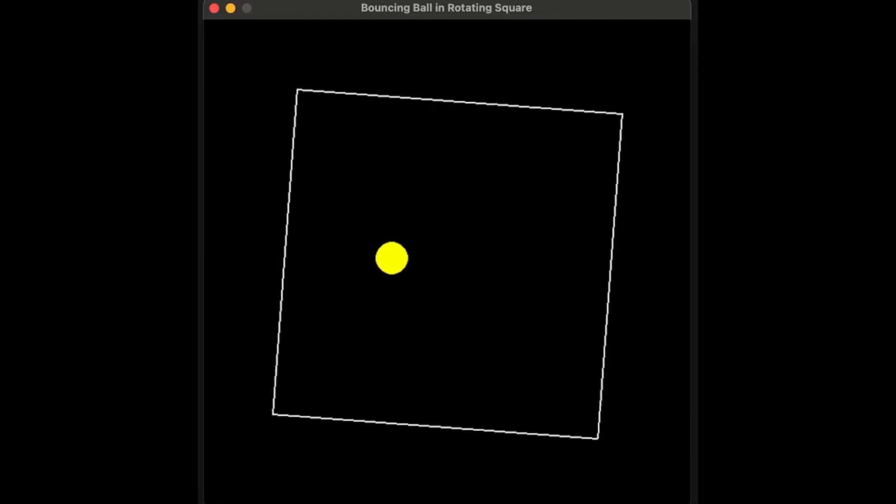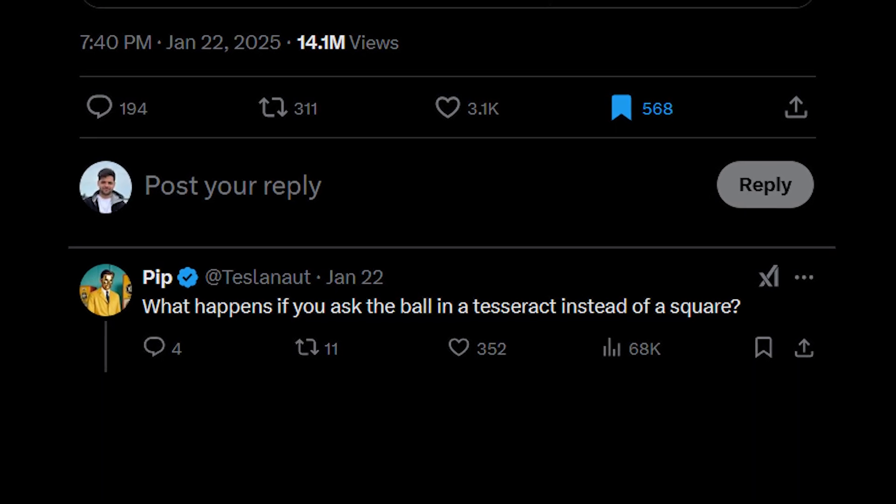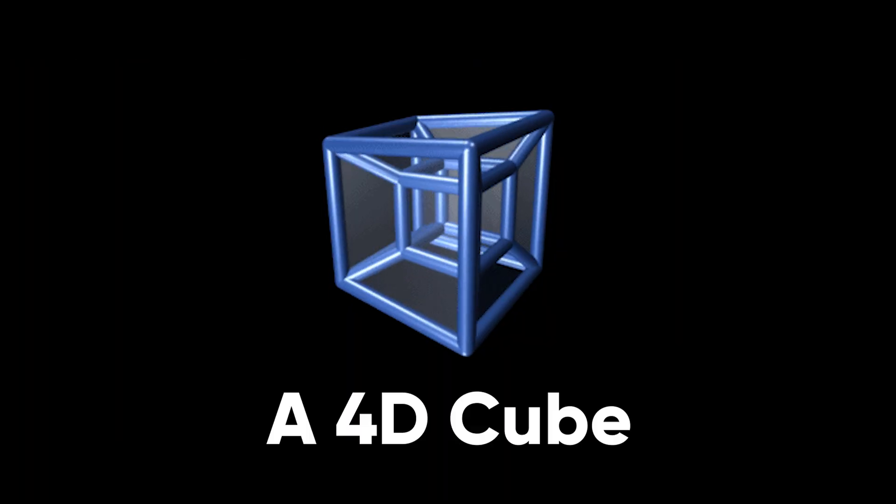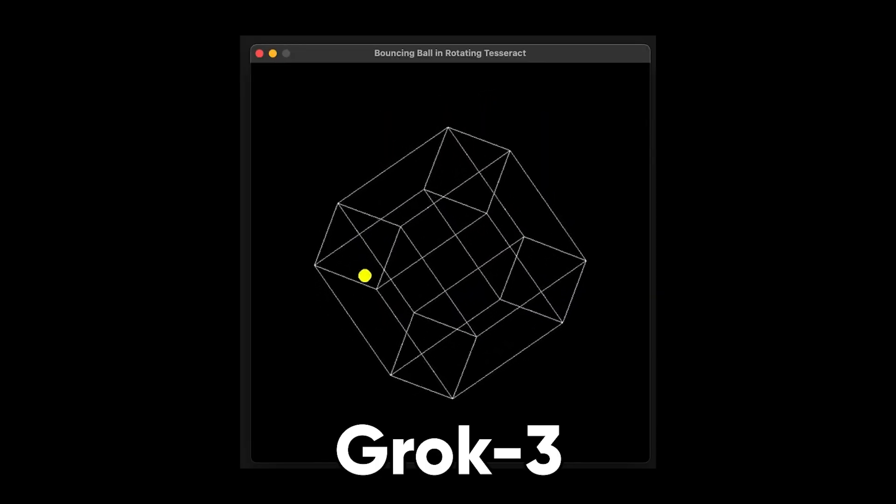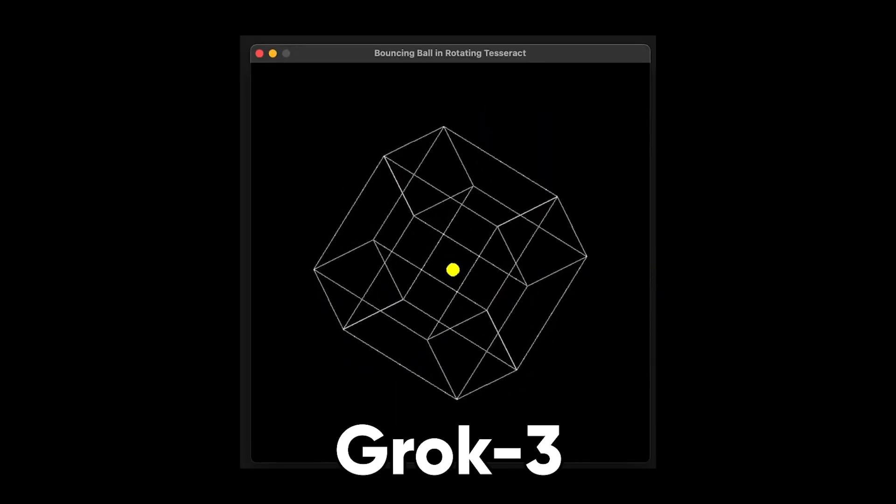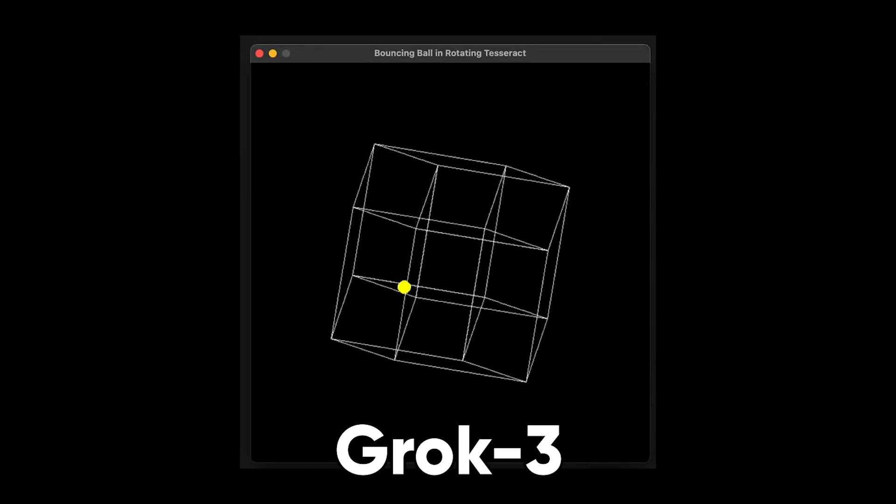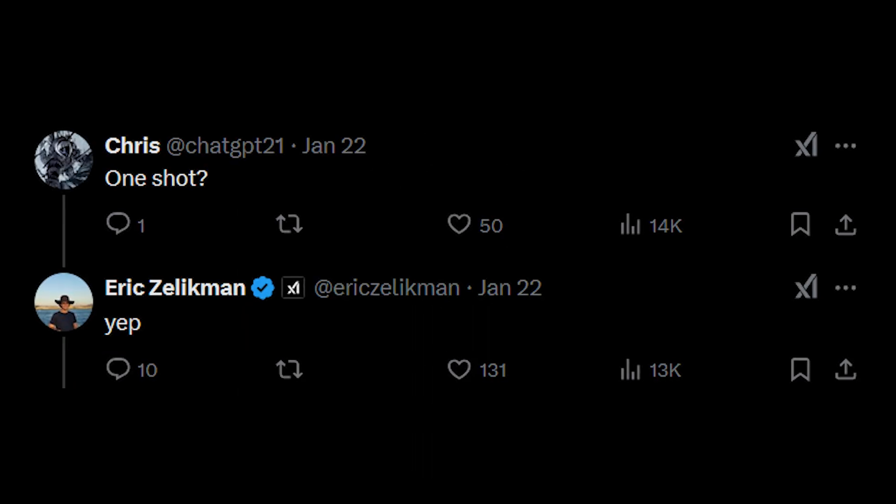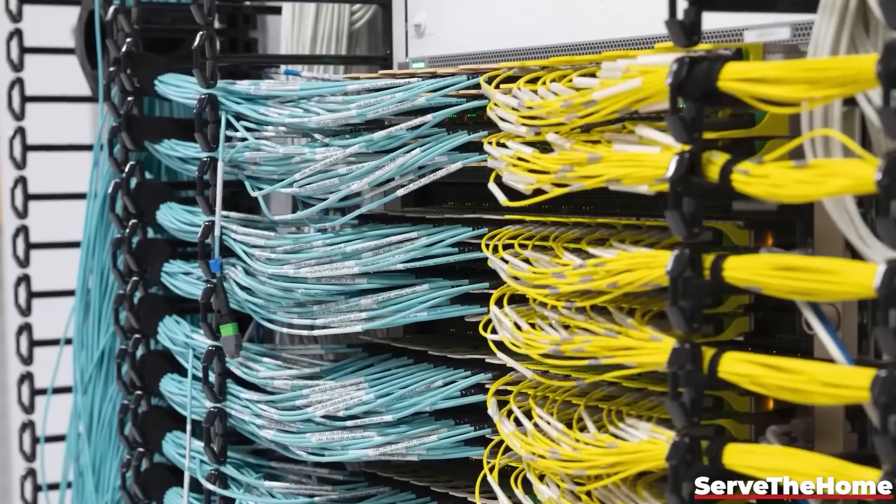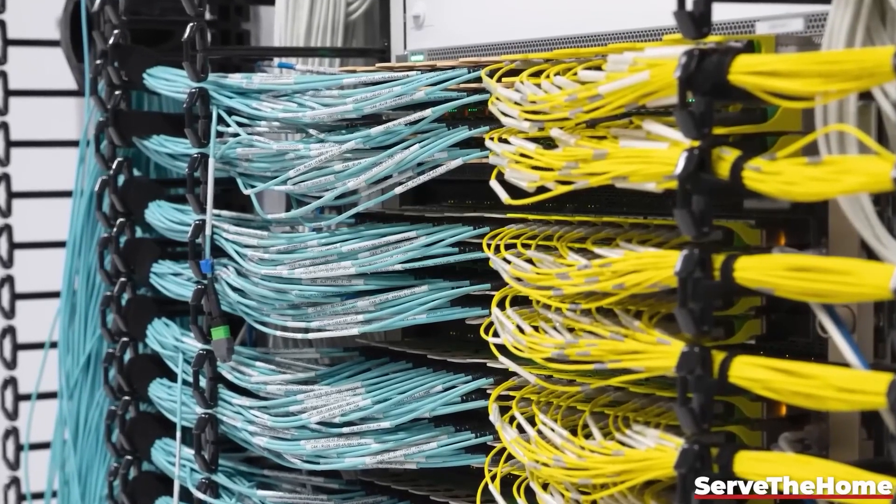Someone replied, what happens if you ask for a ball in a Tesseract instead of a square? If you don't know what a Tesseract is, welcome to the club, but we are about to find out. Here it is, that's a Tesseract, which is like this from another point of view. My brain can't even handle what's going on there, but it seems like it is working. And both of these examples were in one shot.